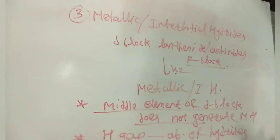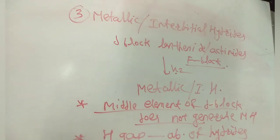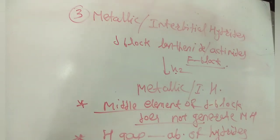To summarize metallic or interstitial hydrides: this type is generated by D-block or F-block elements treated with H₂ at high pressure, generating metallic or interstitial hydrides.